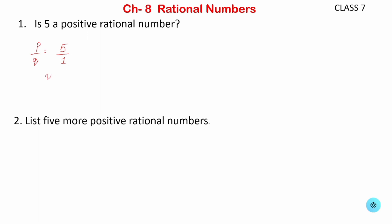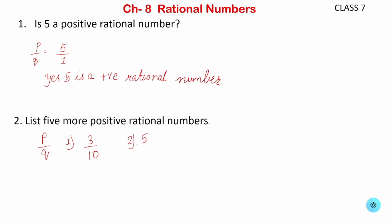A positive rational number has both numerator and denominator positive, so 5 is a positive rational number. Now list 5 more positive rational numbers — it should be in the form of p by q. For example: 3 by 10, 5 by 15, 4 by 3, 7 upon 10, 9 by 15.